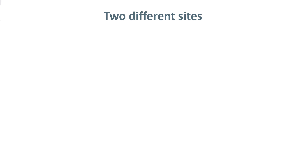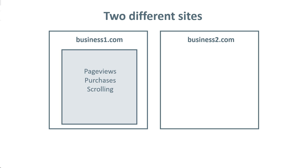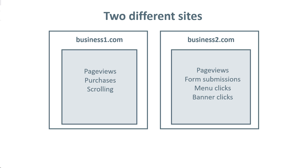For example, you have two different websites — business1.com and business2.com. On the first website, you plan to track page views, purchases, scroll events, and maybe something else. On the second website, you plan to track page views, form submissions, menu clicks, and banner clicks. Now, let's say both of these domains belong to the same business. The person running Google Tag Manager is wondering: should they have one container for the entire company, or should each website have its own container?